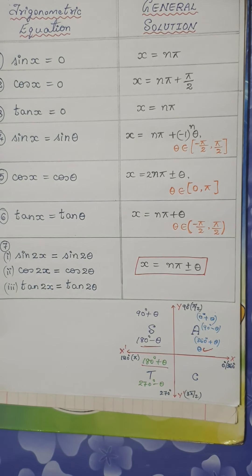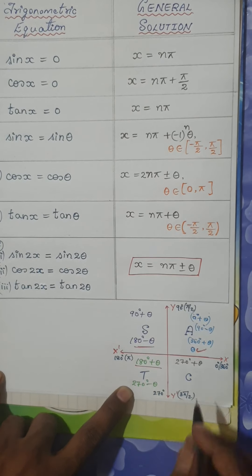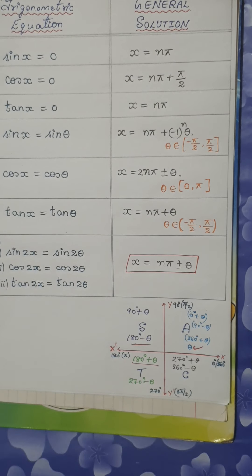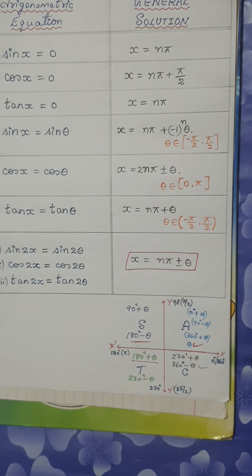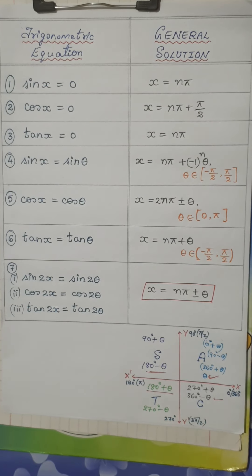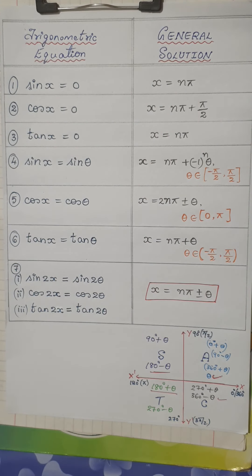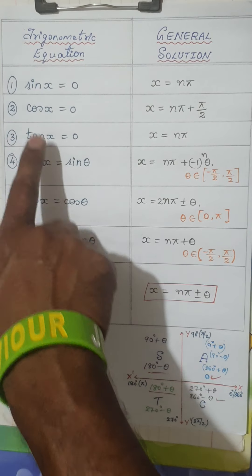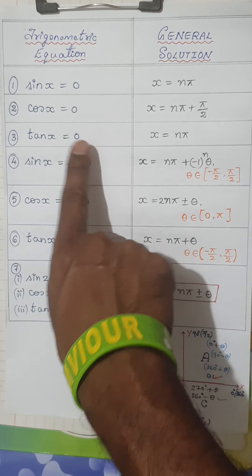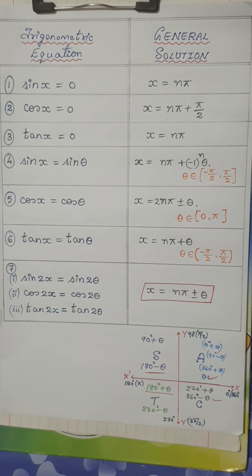Also note: if you have cosecant, secant, or cotangent equations, convert them in terms of sin, cos, or tan respectively before applying the formulas. The three basic functions are sin, cos, and tan. In case of cosecant, secant, or cot, convert to sin, cos, or tan and then proceed.